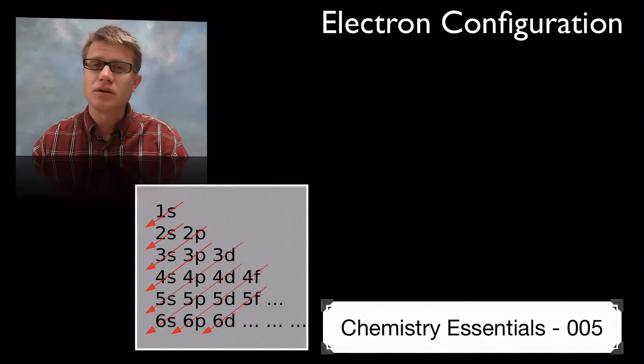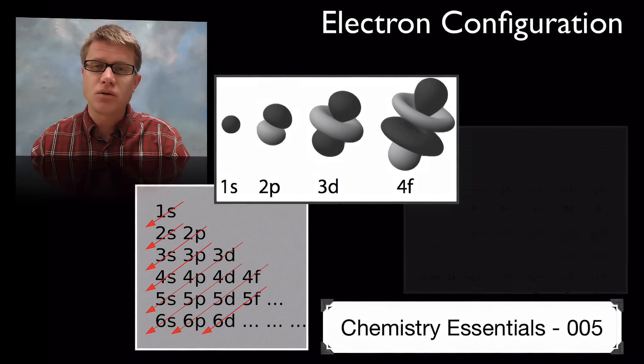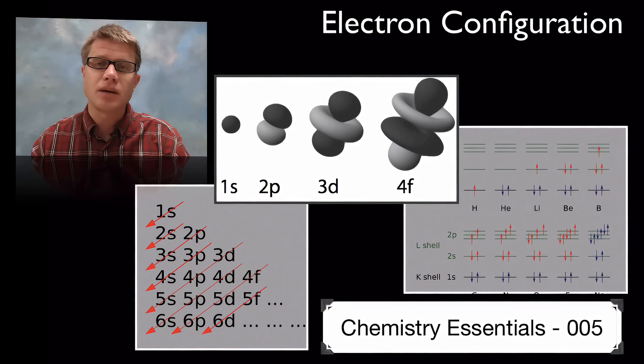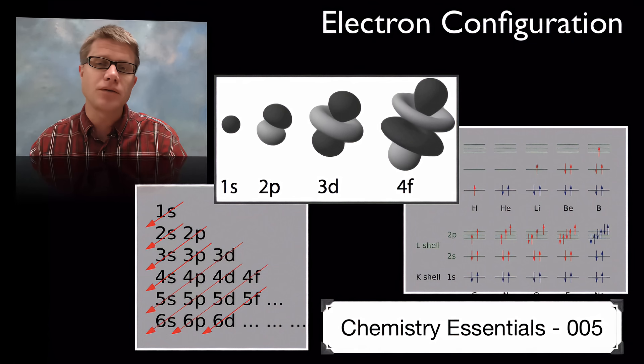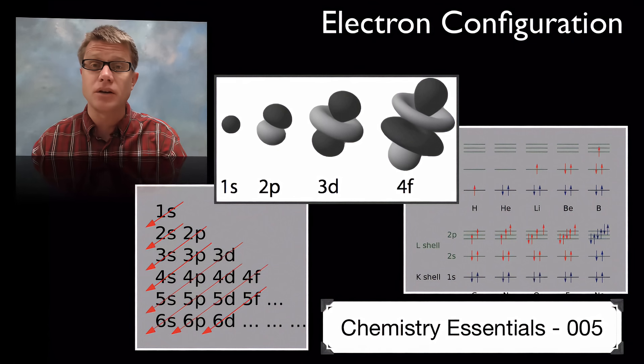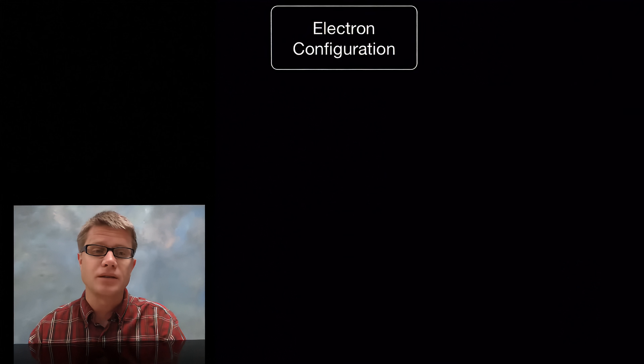When I took chemistry I remember having to do electron configurations. I remember this chart and these different orbitals and this diagram. And I learned how to do it but I never really knew what I was doing. And so in this video I'm going to show you how to do electron configurations. We'll do that at the end. But I also really want to tell you what's going on behind the scenes.